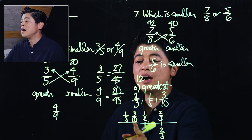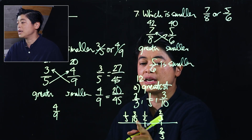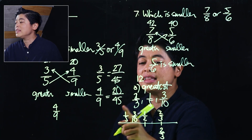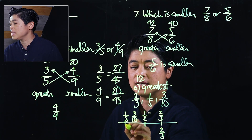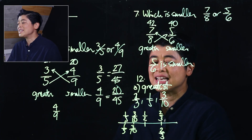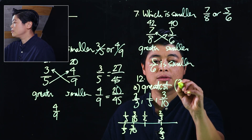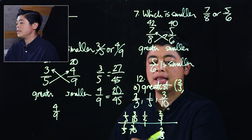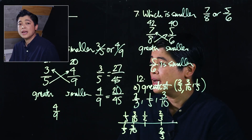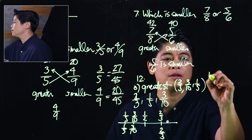So two-thirds is definitely the greatest and goes on the right. Now we need to arrange the two fractions on the left. Cross-multiplying one-fifth and three-tenths: one times ten is ten, and three times five is fifteen. So three-tenths is greater than one-fifth. Therefore, arranged from greatest to smallest: two-thirds, then three-tenths, then one-fifth.